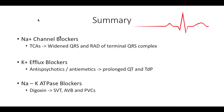Quick summary: TCAs can cause widened QRS. You get right axis deviation at the terminal part of the QRS complex, which you look for in AVR because that's your right limb lead. Antipsychotics and anti-emetics can cause prolonged QT and Torsades de Pointes. And the cardiac glycosides can cause everything.